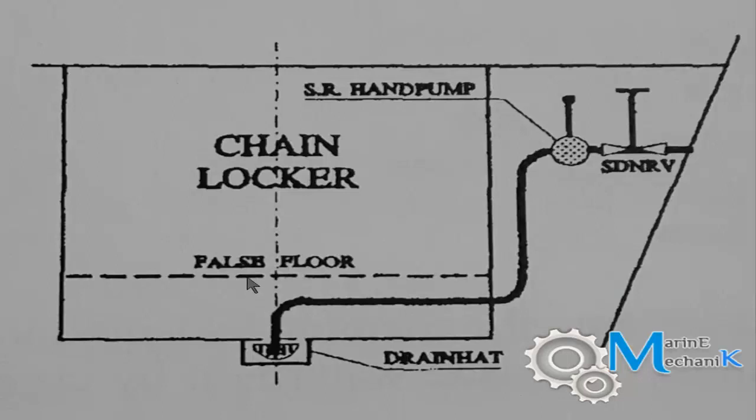So here is one arrangement which we had in older ships, with the chain locker and the false floor—that is, the perforated plates upon which the chain rests—and there is a drain hat on the bilge well. There is a mud box strainer, and through that there is a line to an SR hand pump, which is a semi-rotary hand pump, and through a screw-down non-return valve it is pumped overboard.